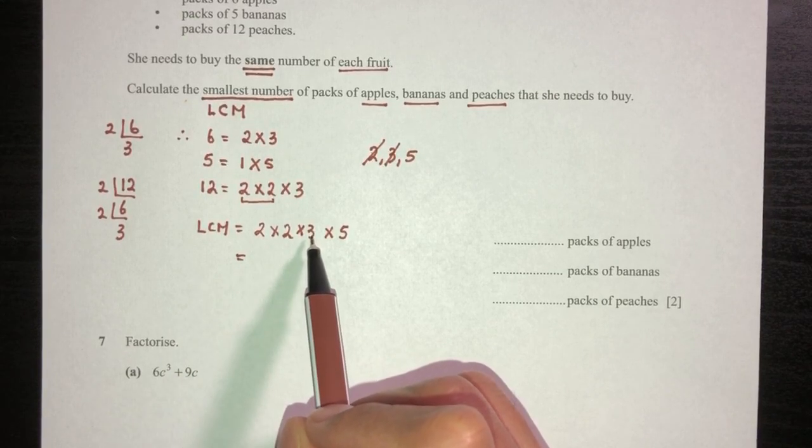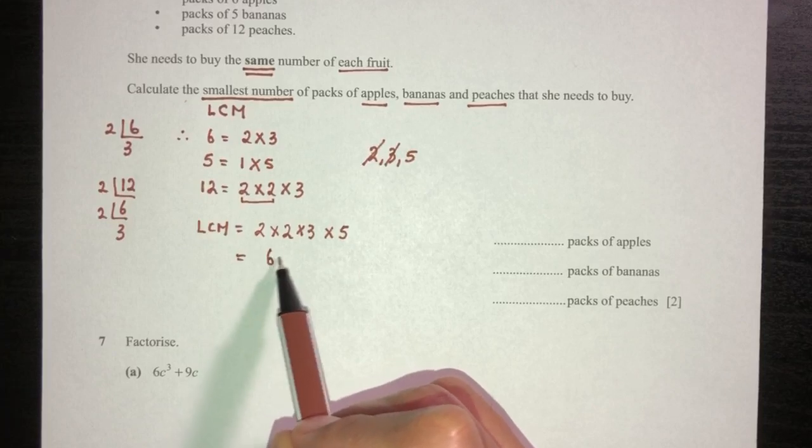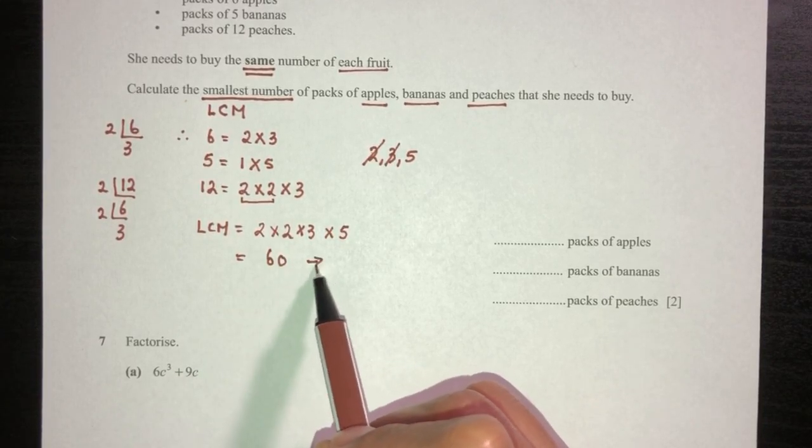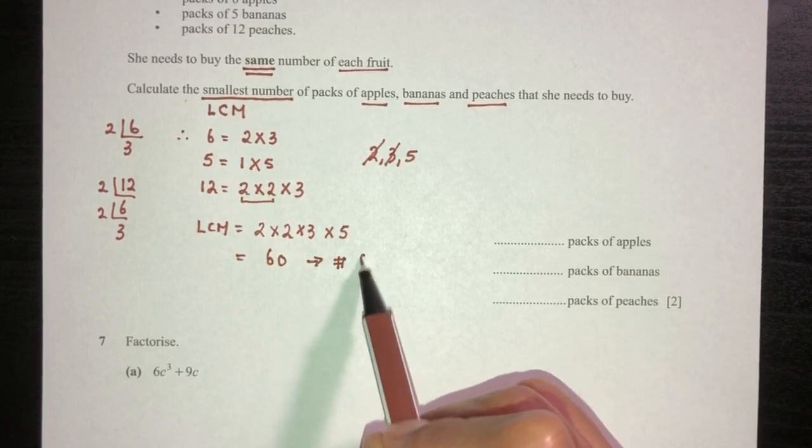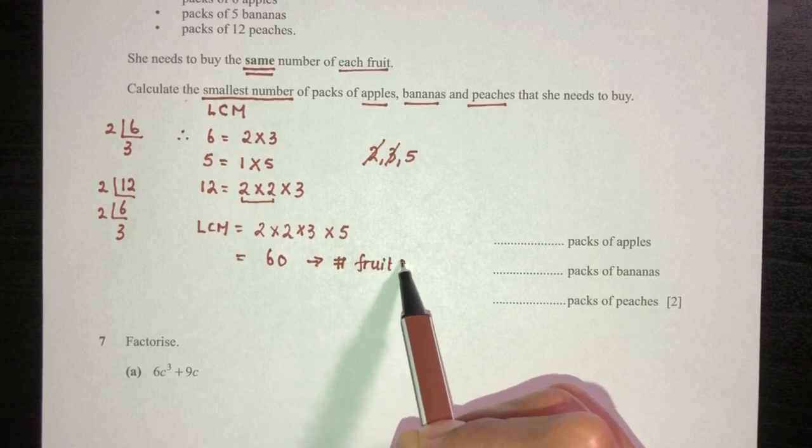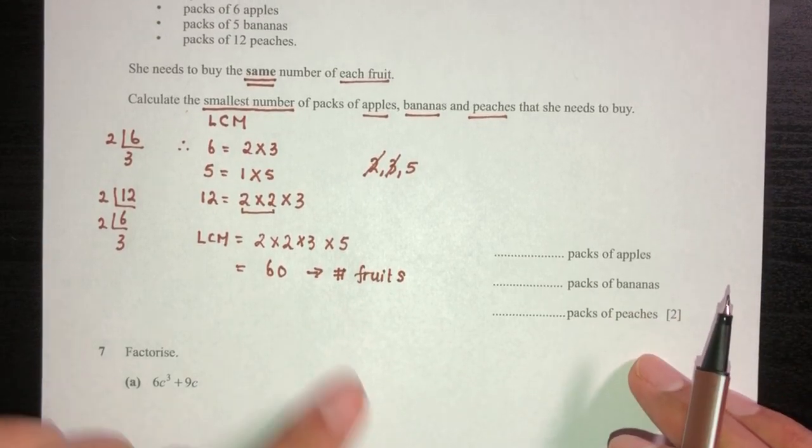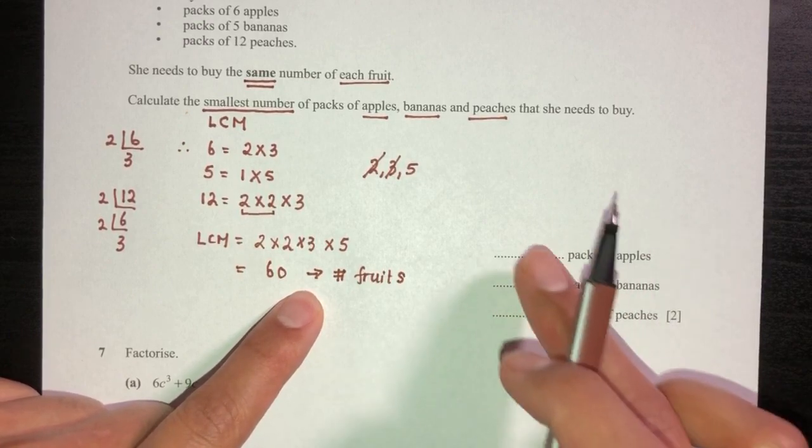So the LCM is two times two is four, times three is twelve, times five that will be sixty. So sixty is the number of fruits that she needs to buy for each of them. Now we have to find the packs.